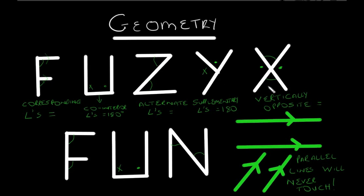And vertically opposite angles, this is when two lines cut each other to make this X shape. Now, if that is 50, that will be 50.